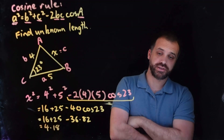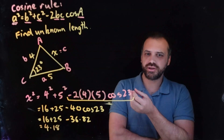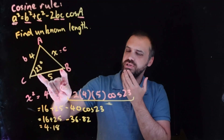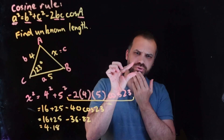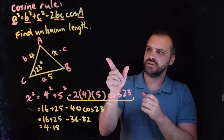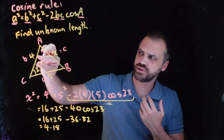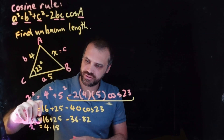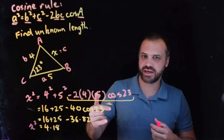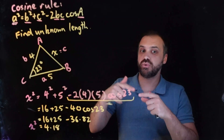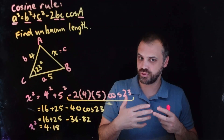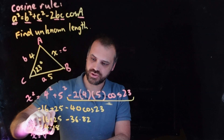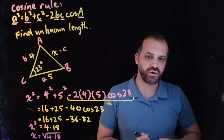The answer so far is 4.18, but stop and think — is that correct? The lengths are 4 and 5, and the angle is very small; 23 degrees is a small angle. That answer looks wrong — that side should be way smaller. What went wrong? The formula says x squared equals this, not x equals this. The second common mistake is forgetting that last step: x equals the square root of 4.18, not just 4.18.